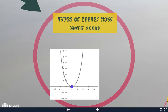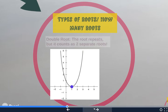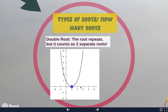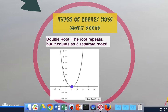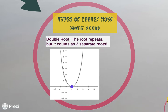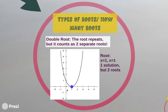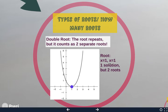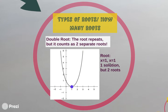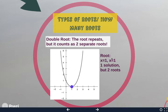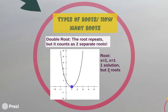When the graph bounces off the zero, this is a double root and counts two times. So this graph actually has two x-intercepts, or two zeros, or two roots, because it comes down and bounces off rather than crossing through. We have a double root at x equals one, which means our two roots are x equals one and x equals one. So there is one actual answer but two roots.